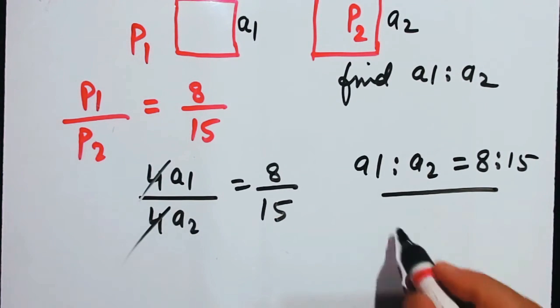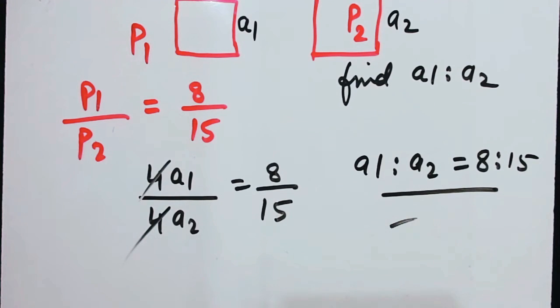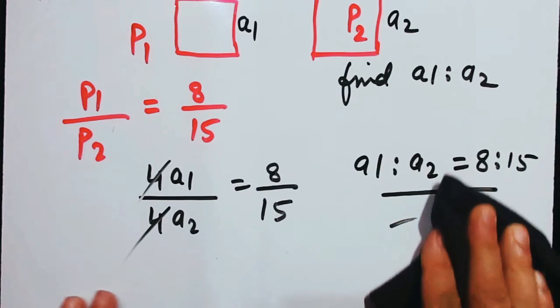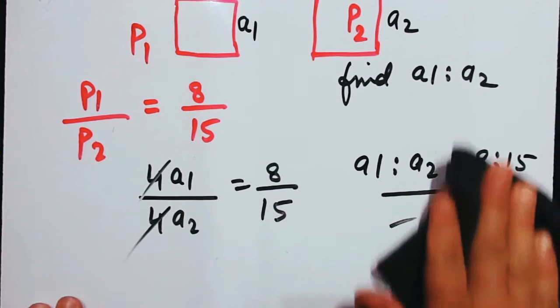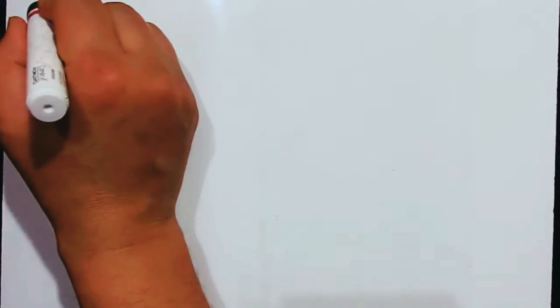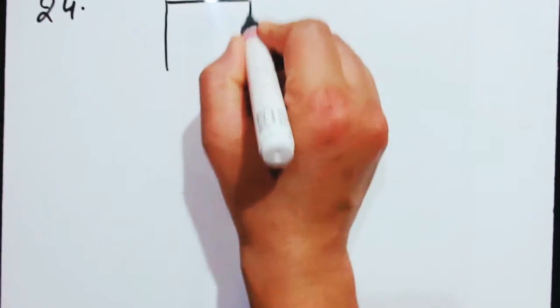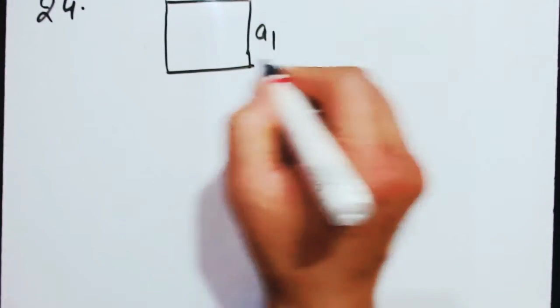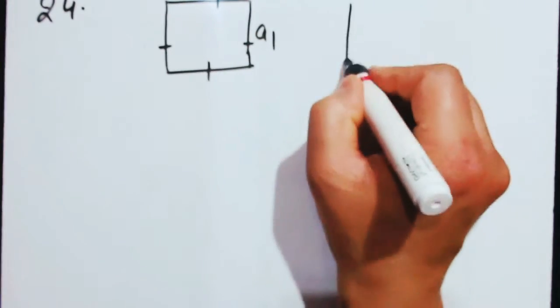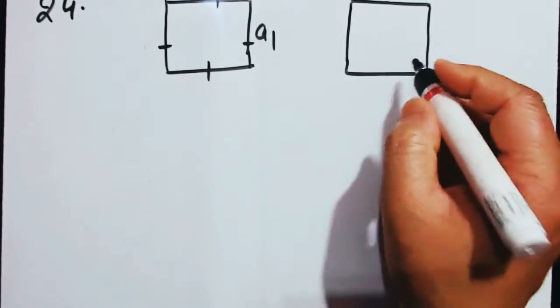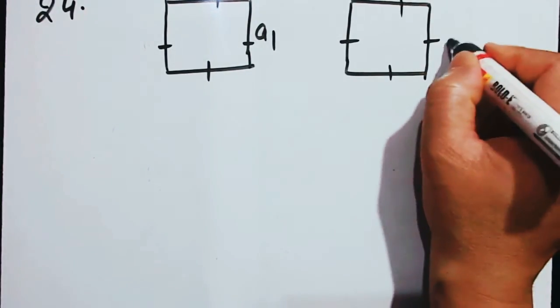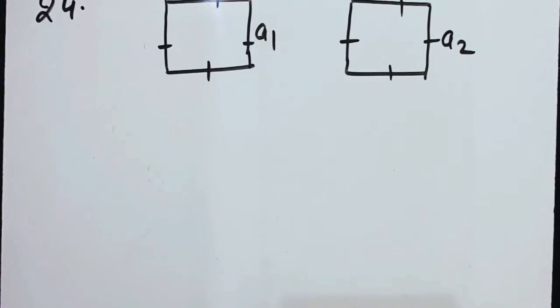There are many things which have been made complicated on the internet — I just put the values and got the correct answer. Now number 24: the length of the sides of two squares are in the ratio 8 is to 15. If side of the first square is A1 and the second is A2, they say A1 is to A2 equals 8 is to 15.